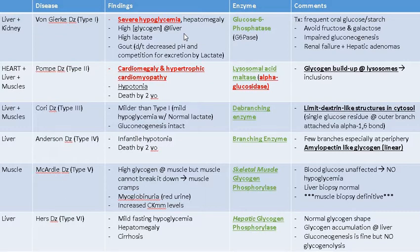The enzyme deficient in Pompe's is alpha-glucosidase, which is another name for lysosomal acid maltase — a lysosomal enzyme. This distinction is worth knowing as alternate names for enzymes can appear on Step 1. Pompe's is fairly straightforward: hypotonia, death by two years old, most likely from a cardiac problem due to glycogen buildup within lysosomes.